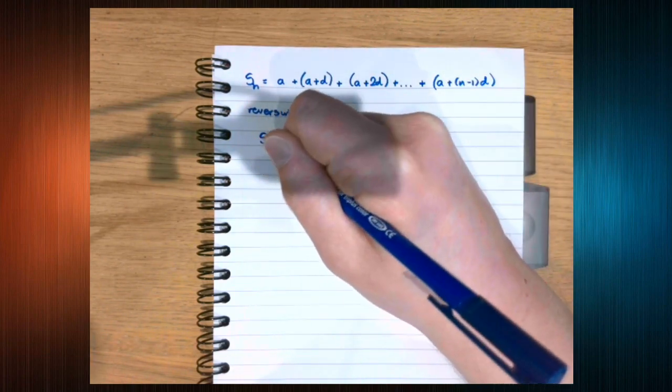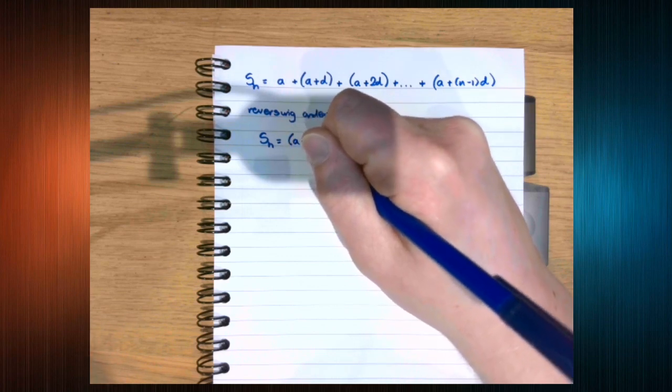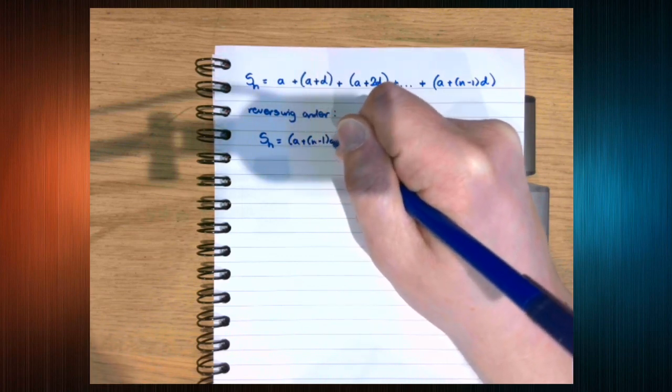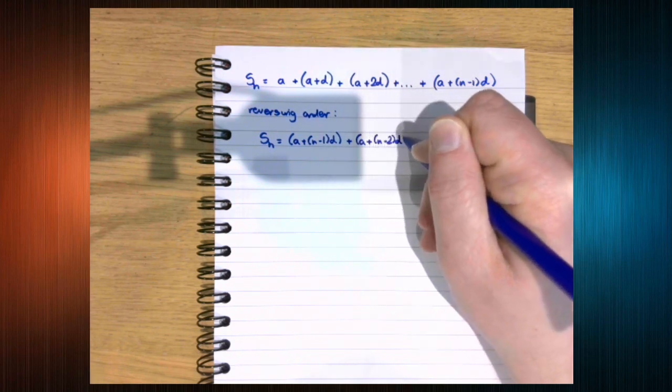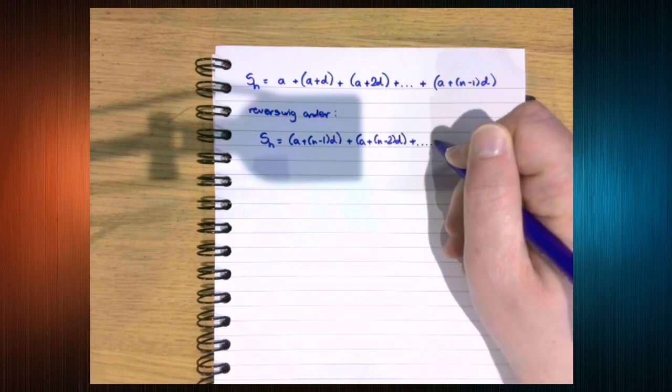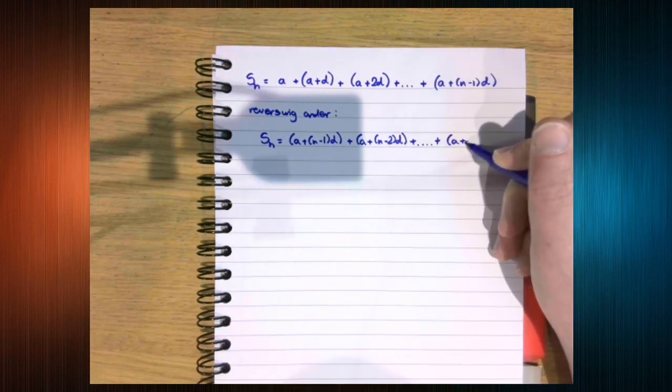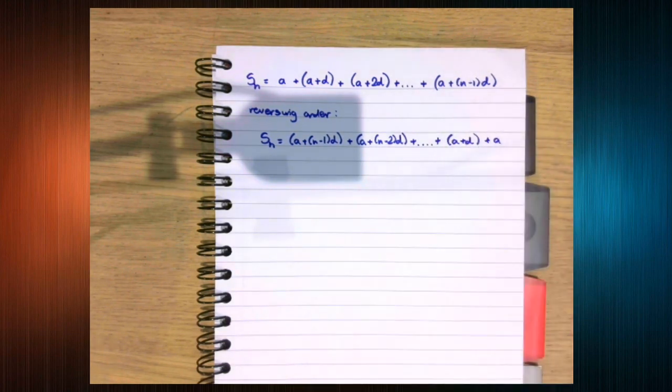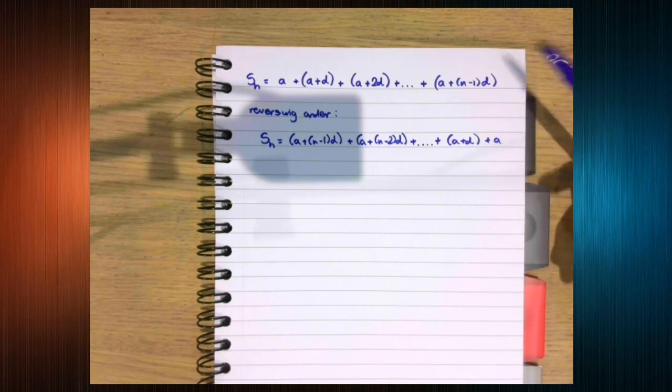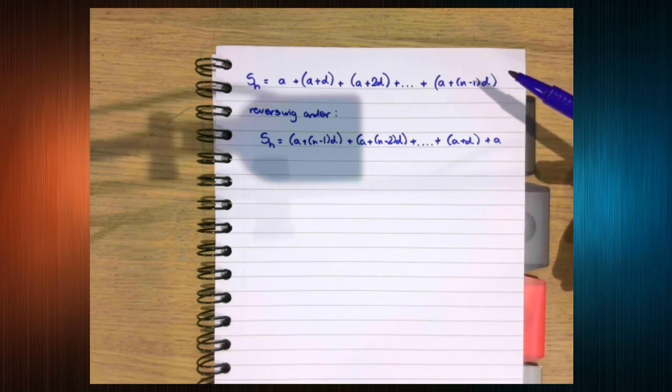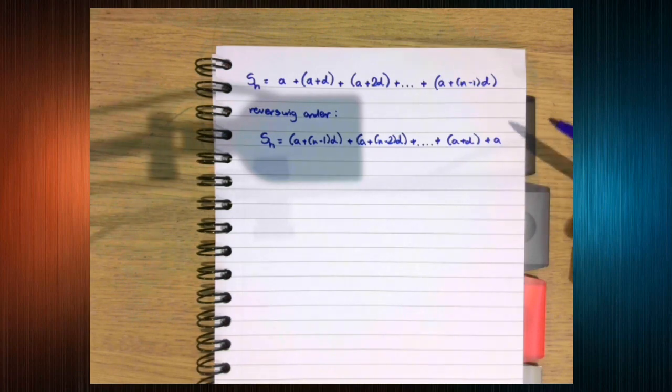So we know that Sn is also a plus n minus 1, d, plus a plus n minus 2, d, plus all the way down to plus a plus d plus a. Second step, Gauss took these two equations and did what with them? He added them together.